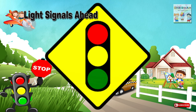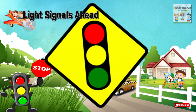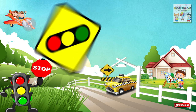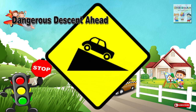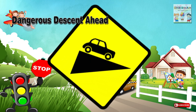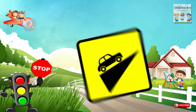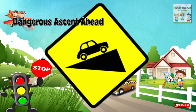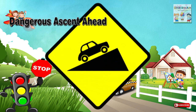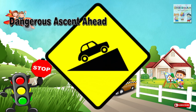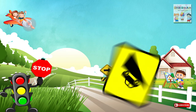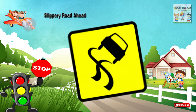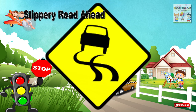Twenty-six: Light signals ahead — an intersection ahead controlled by traffic light signals. Twenty-seven: Dangerous descent ahead — a section of a road ahead where there is a steep downward gradient. Twenty-eight: Dangerous ascent ahead — a section of a road ahead where there is a steep upward gradient.